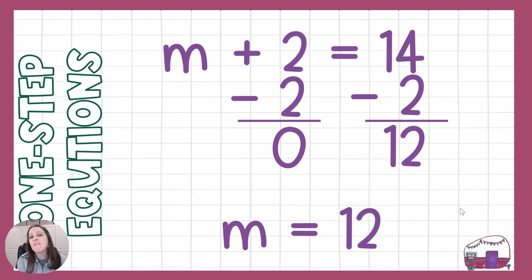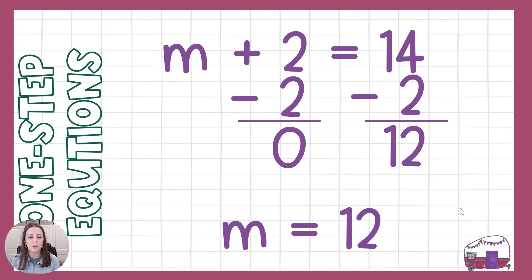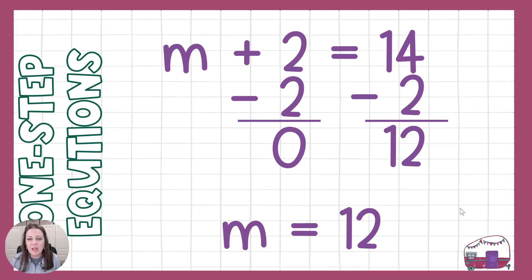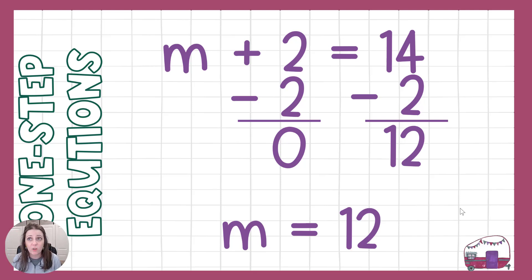What I love about equations, mathematicians, is that I can take that answer and plug it back in to see if I'm right — and then I know I'm correct every time. What does that look like? Well, we had n plus 2, we think n is 12, so 12 plus 2 is 14. That's a true statement, and I know I'm correct.